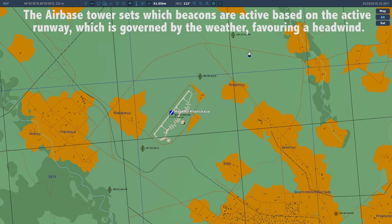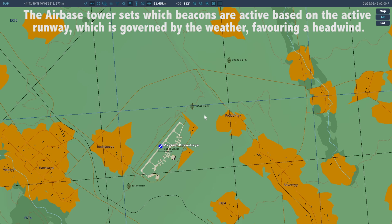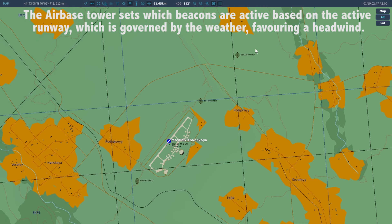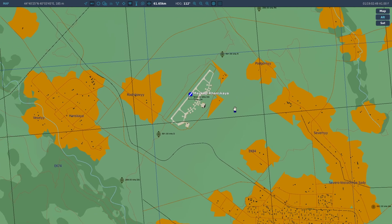What we're going to do is tune channel 1 to 289 and channel 2 to 591. We'll then listen to the morse code to find out which beacon we're being brought in on. When we know that, we then know which direction the runway's going to be, and we can set our course.